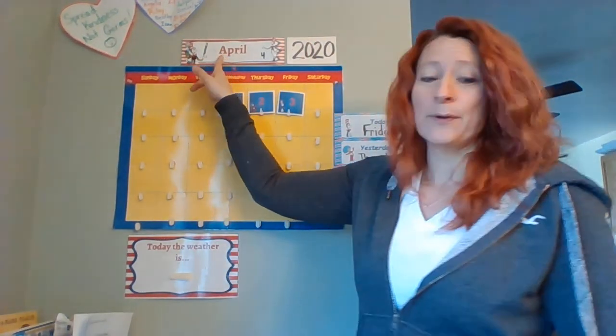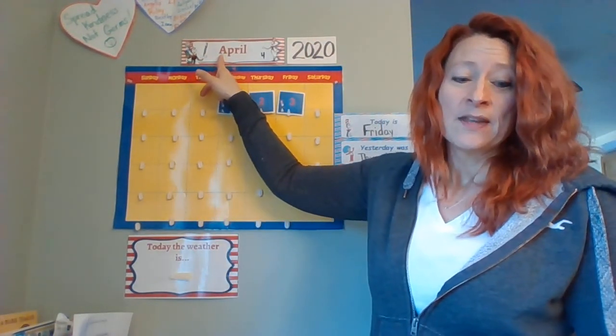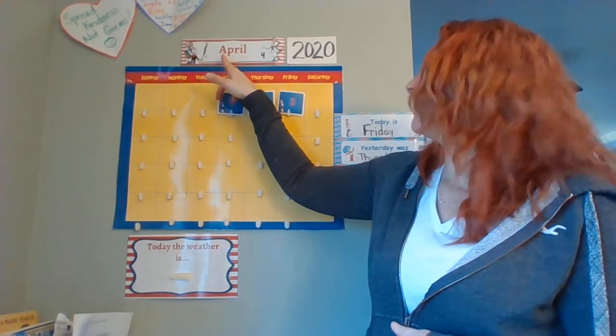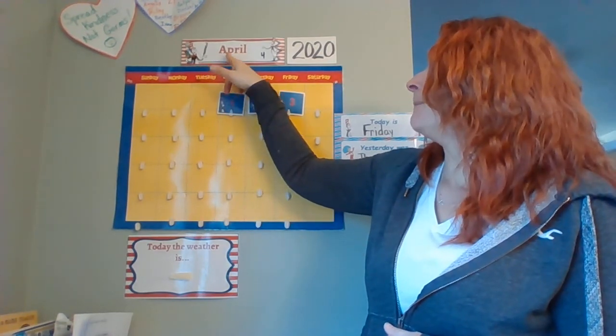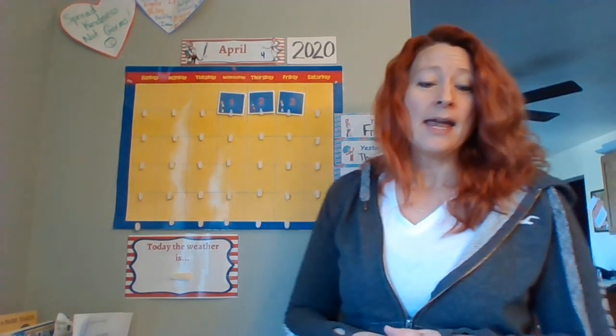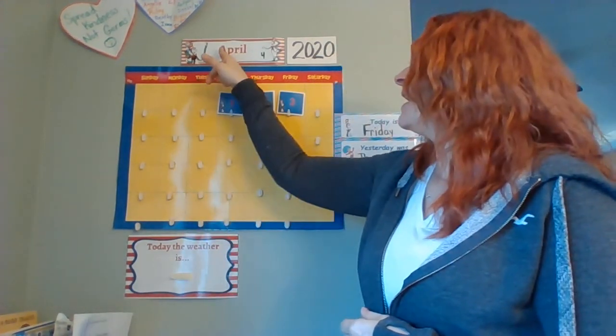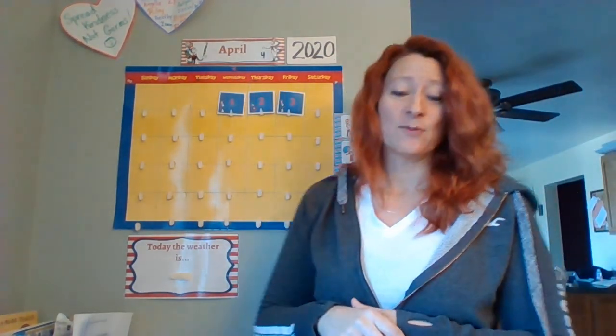All right, so let's look at calendar. We're going to sing our April song. It is April. A-P-R-I-L. April is the fourth month and spring is here as well. Days are getting warmer and flowers start to sprout. A-P-R-I-L. That's what April's all about.